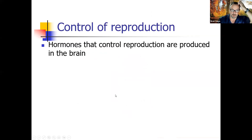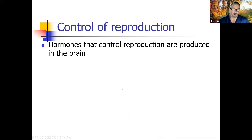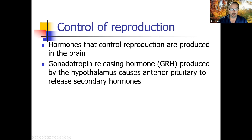Control of reproduction: hormones that control reproduction are produced in the brain. Gonadotropin releasing hormone (GRH), produced by the hypothalamus, causes the anterior pituitary to release secondary hormones. The hypothalamus sends a signal to the pituitary, which releases hormones that control all other glands — in this case the reproductive glands, testicles and ovaries. Follicle stimulating hormone (FSH) controls gametogenesis along with the sex hormones.